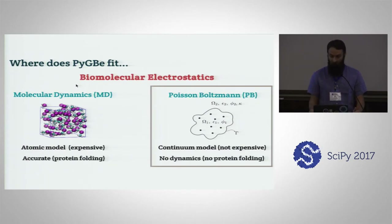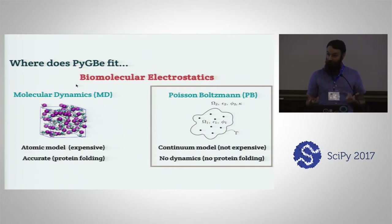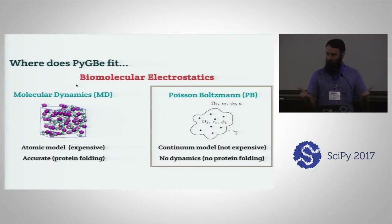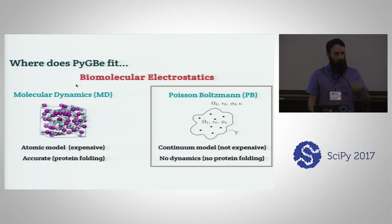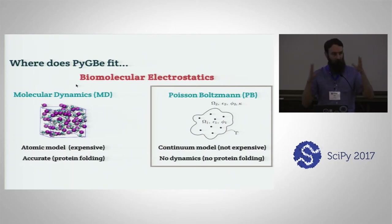On the other side, we can do continuum electrostatics. In this model, we have a solvent region that we treat as a continuum instead. The solvent region we usually treat as just water with salt, since we're targeting biological applications. We have a charge distribution inside the protein that mimics atom locations and their electrode potential. Inside, it's just Gauss's law — a Poisson problem. Outside, we use Poisson-Boltzmann because we have salt ions that induce a charge, so we have to take care of that.